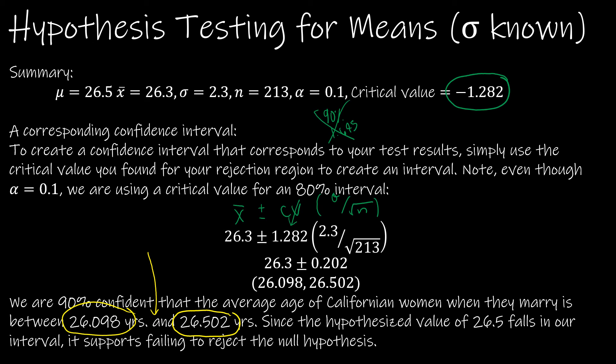And since the hypothesized value of 26.5 falls in our interval, it supports failing to reject the null hypothesis.